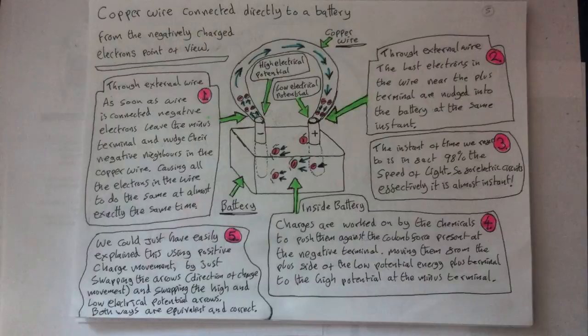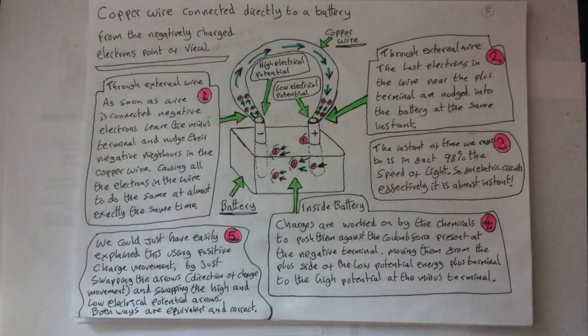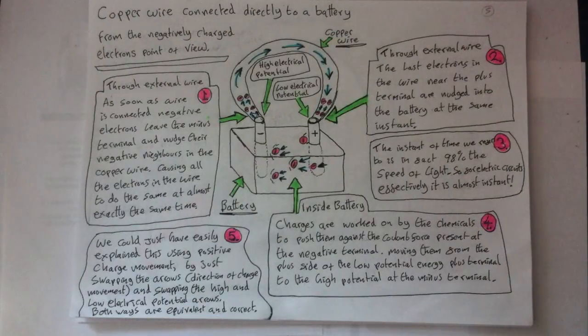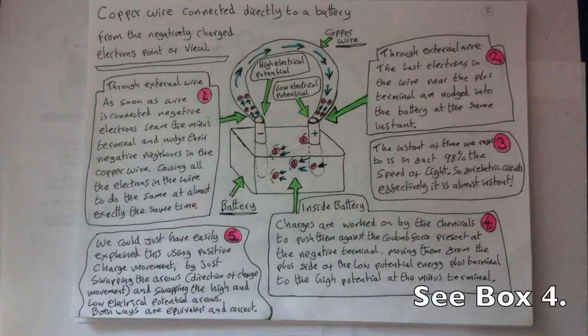Note this is how fast energy propagates, we are not referring to charge velocity here. Now this layer of electrons from the external copper wire that enter via the positive terminal into the battery, these charges will all now be at zero potential energy.